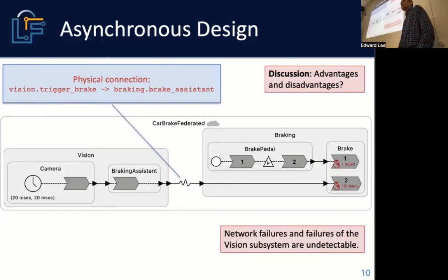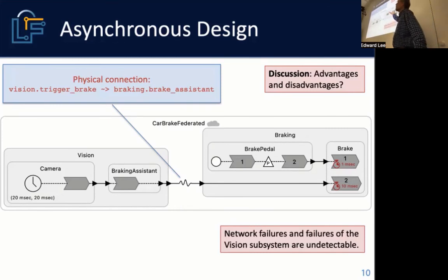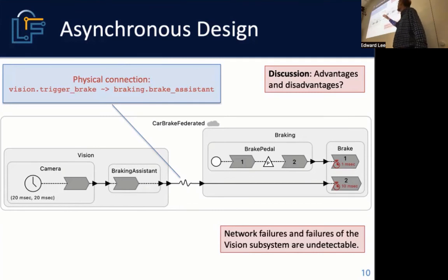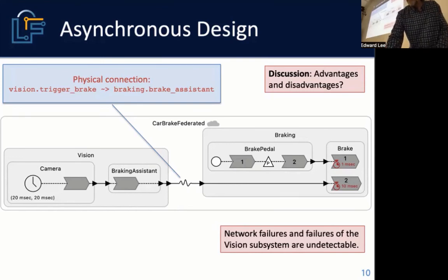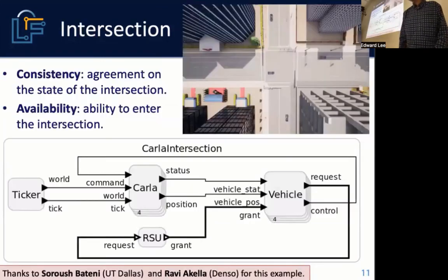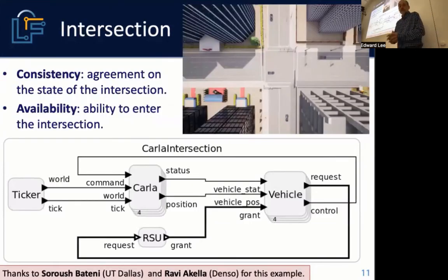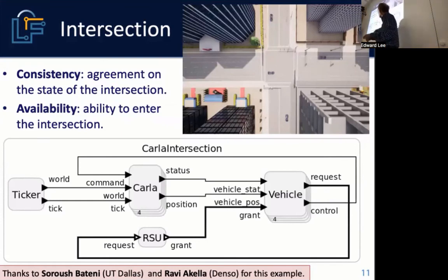This particular ADAS application has the property that you really want to emphasize availability — that's why we chose decentralized coordination, in order to be able to quickly respond to the brake pedal. But that's not always the right choice. Let me give you another example.